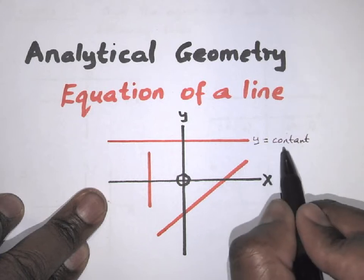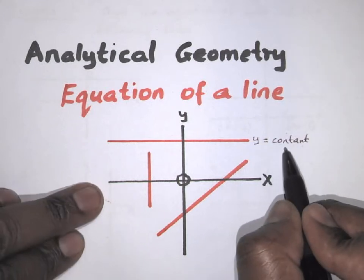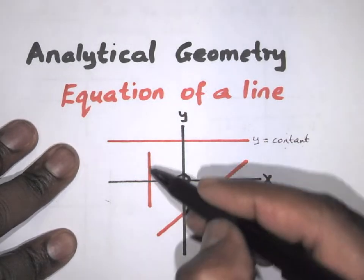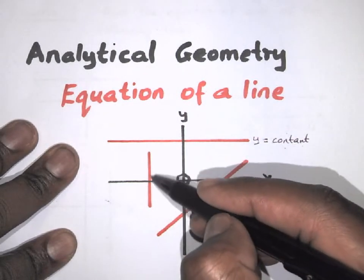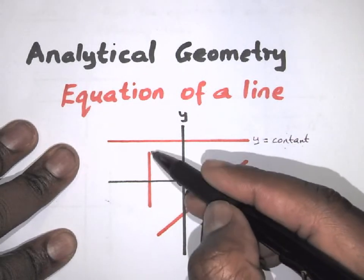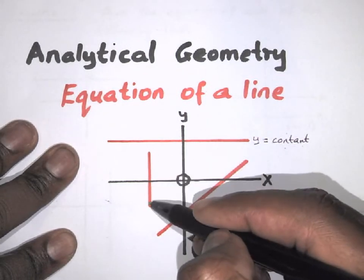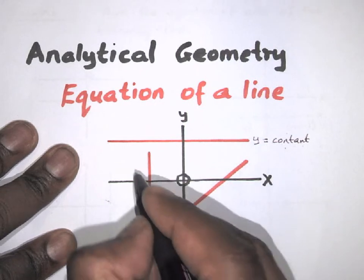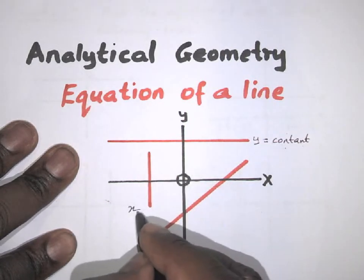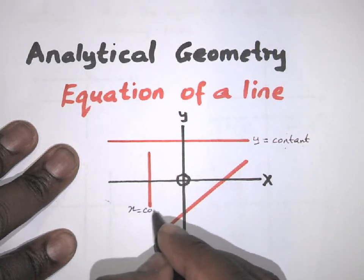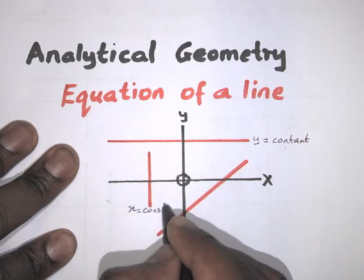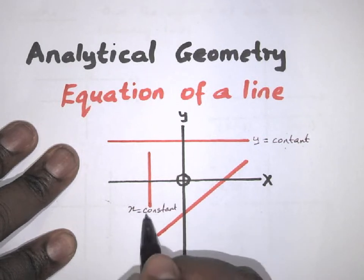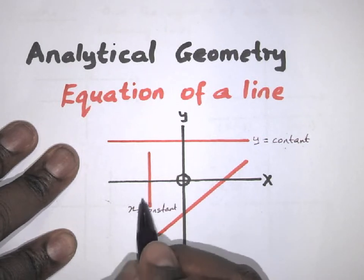If the line only cuts the x-axis, then the equation will be x is equal to a constant as well. So x would be equal to a number.